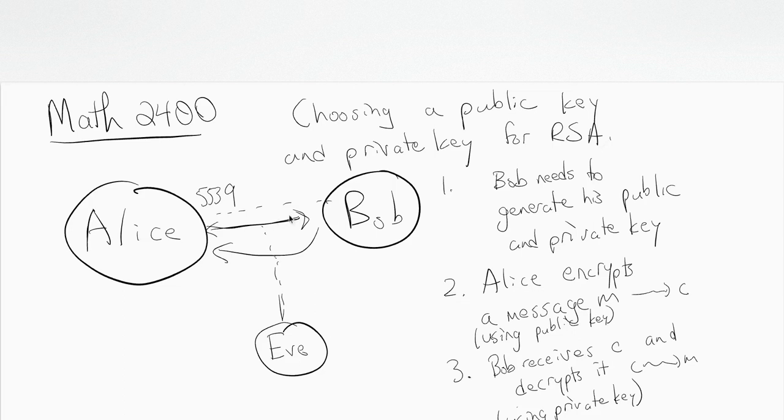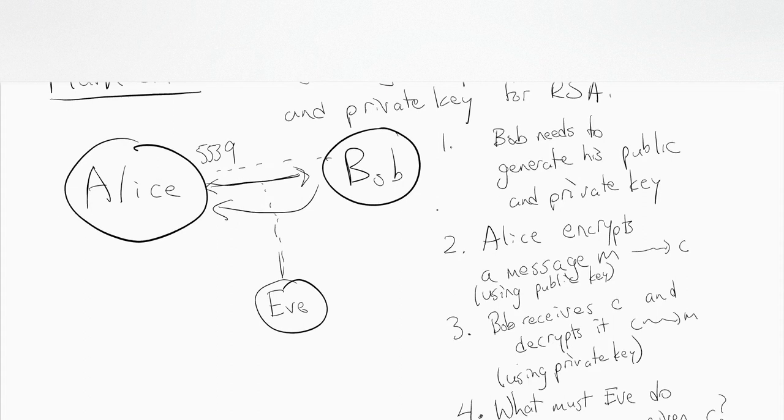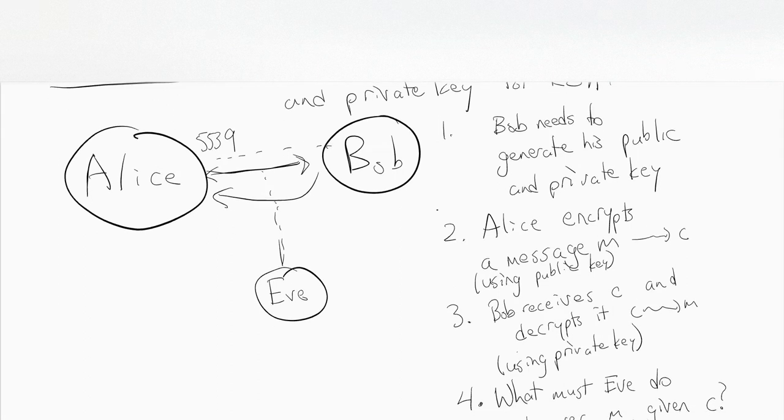There's four things we have to talk about, so four videos. The first is this video. We need to discuss how Bob generates his keys.